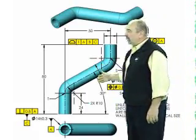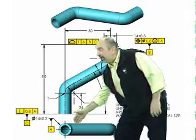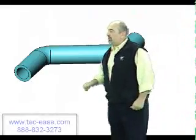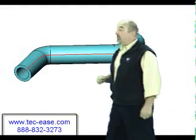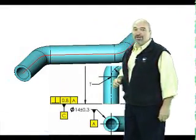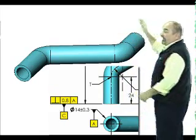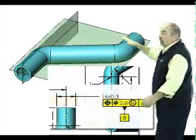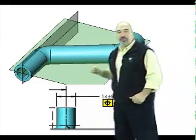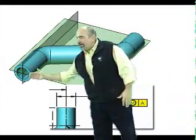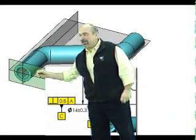Here's a drawing of a preformed tube. Datum feature A is the cylinder at the end of the tube and it establishes an axis. That axis is the intersection of two perpendicular datum planes. Datum feature B is a cylinder at the other end of the tube and it's used to orient the datum planes. Datum feature C is a face here at the end of the tube and it gives us our third datum plane.